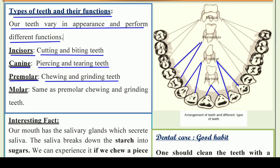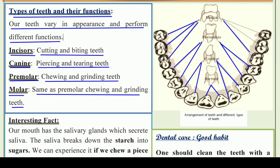After the premolars, the last teeth are molar teeth — same as premolars — for chewing and grinding. Molars help in chewing and grinding the food, just like premolars. In this way, our food is broken down into small pieces completely, and we can easily ingest and then digest it. Now when you stand in front of a mirror today, try to recognize which are your incisors, canines, premolars, and molar teeth.